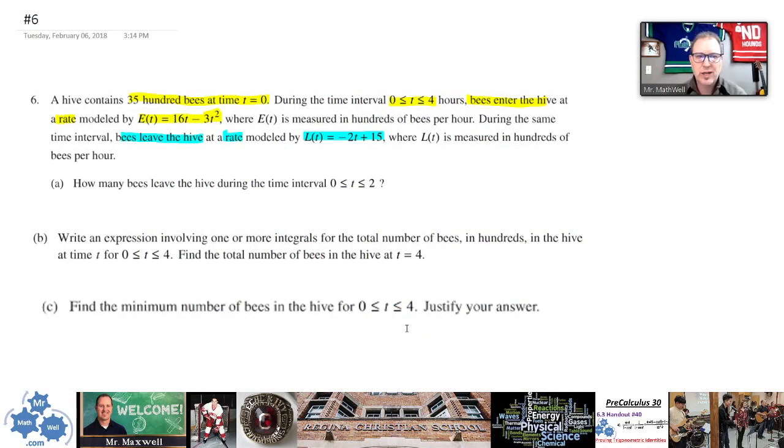Alright, so here is an AP exam free response question, and this talks about rate of bees entering a hive and the rate of bees leaving the hive, so you have bees flying in and bees flying out at the same time. We're also told that we have a certain number of bees in there at time zero when we start, and so this question is asking about how we keep track of the bees that are in the hive at any given time considering the different rates that are going on. Those rates are described differently, right? The rates change over time. Why don't you take a look at this question, pause the video, work for 10-15 minutes, and then come back and we'll talk about the answers.